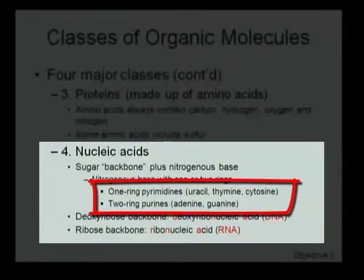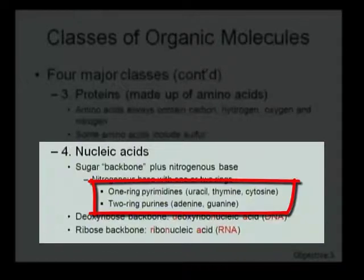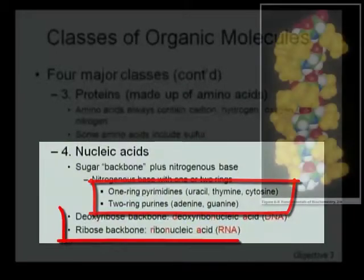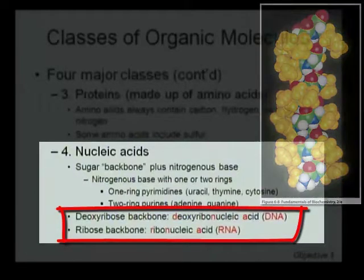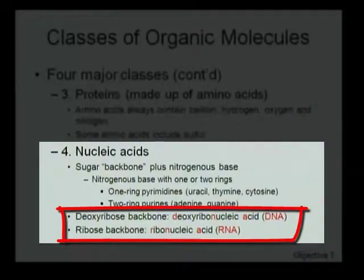If the nitrogenous base makes one ring, we call them pyrimidines. Examples include the bases uracil, thymine, and cytosine. If they make two rings, we call them purines — examples are adenine and guanine. If the backbone is deoxyribose, we call it deoxyribonucleic acid or DNA. If the backbone is ribose, we call it ribonucleic acid or RNA.